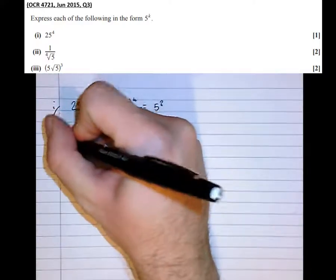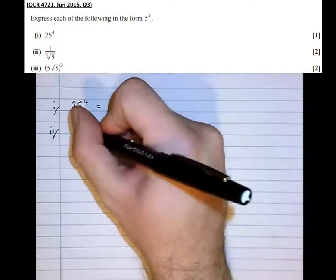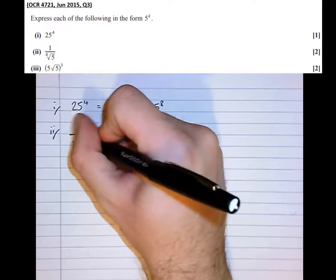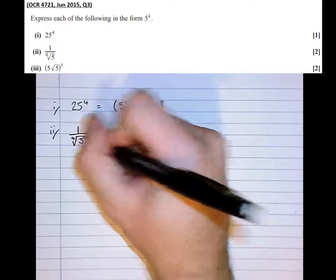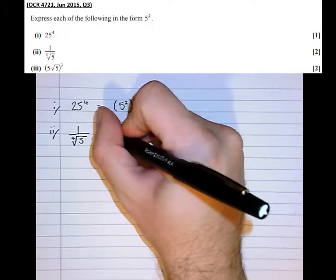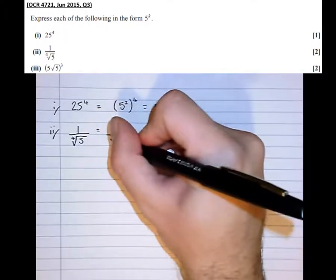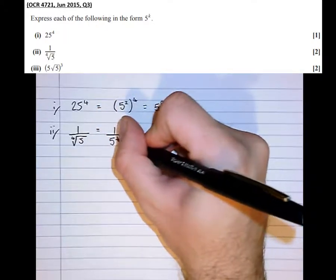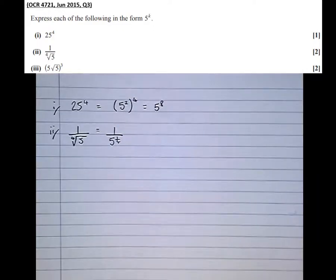Part 2, we've got 1 over the 4th root of 5. Well that's 1 over 5 to the power of a quarter. The power of a quarter means 4th root. But then, we're still not finished yet. We need it to say 5 to the power of, not 1 over 5 to the power of.